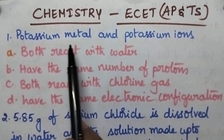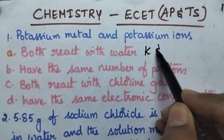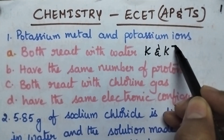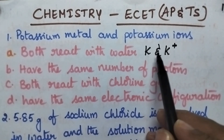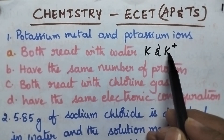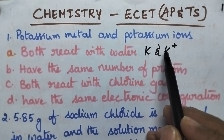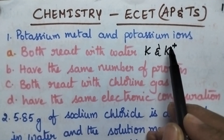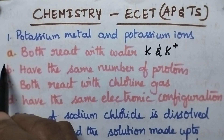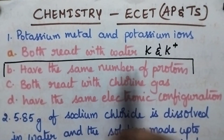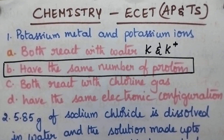Consider potassium and potassium ions. Potassium consists of 19 electrons whereas potassium ion consists of 18 electrons, so they have different electronic configurations and different chemical properties. But they contain the same number of protons, so option B is the right answer.